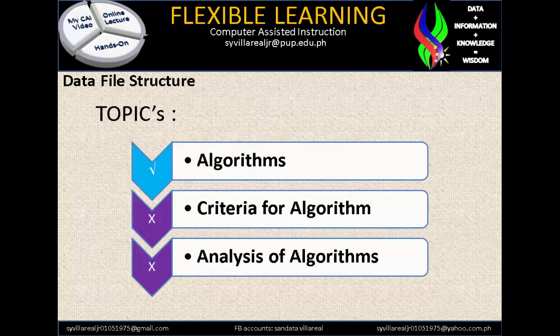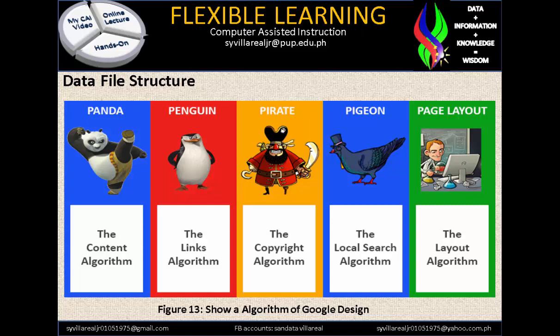Now let's proceed to our second topic: Criteria for Algorithm. Figure 13 shows an algorithm of Google's design. Remember that Google transformed the world through their algorithm, and who is in charge? Computer science and computer engineering professionals — those are the people behind Google. Without Google, it would be very hard for us to access huge amounts of data, because Google incorporated all that data to simplify what we are doing through education.